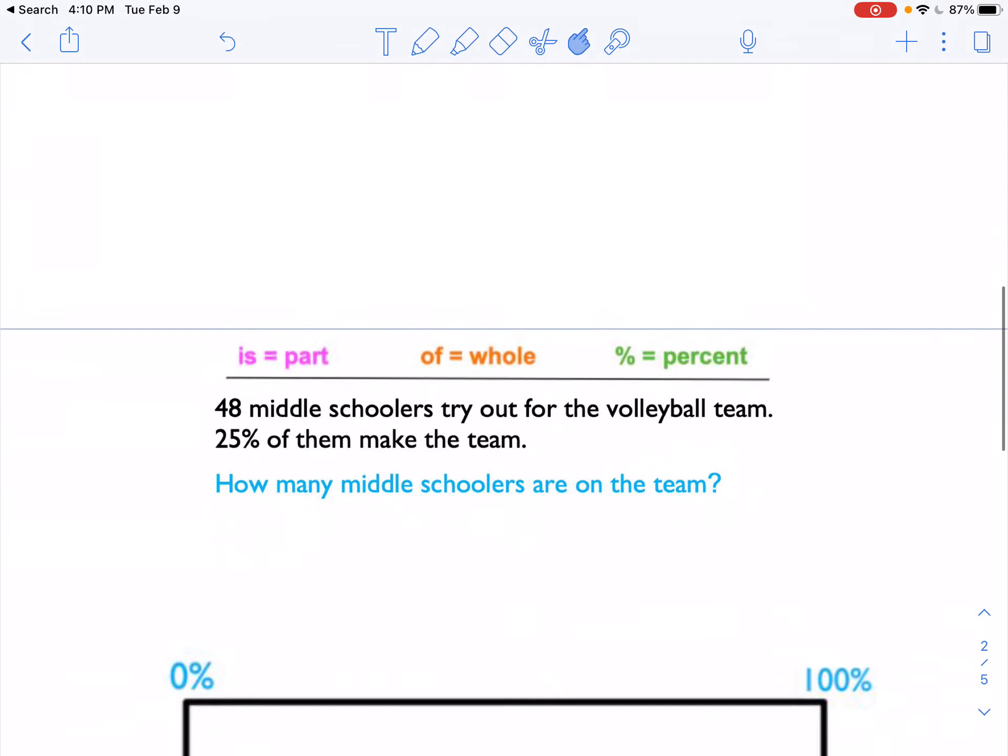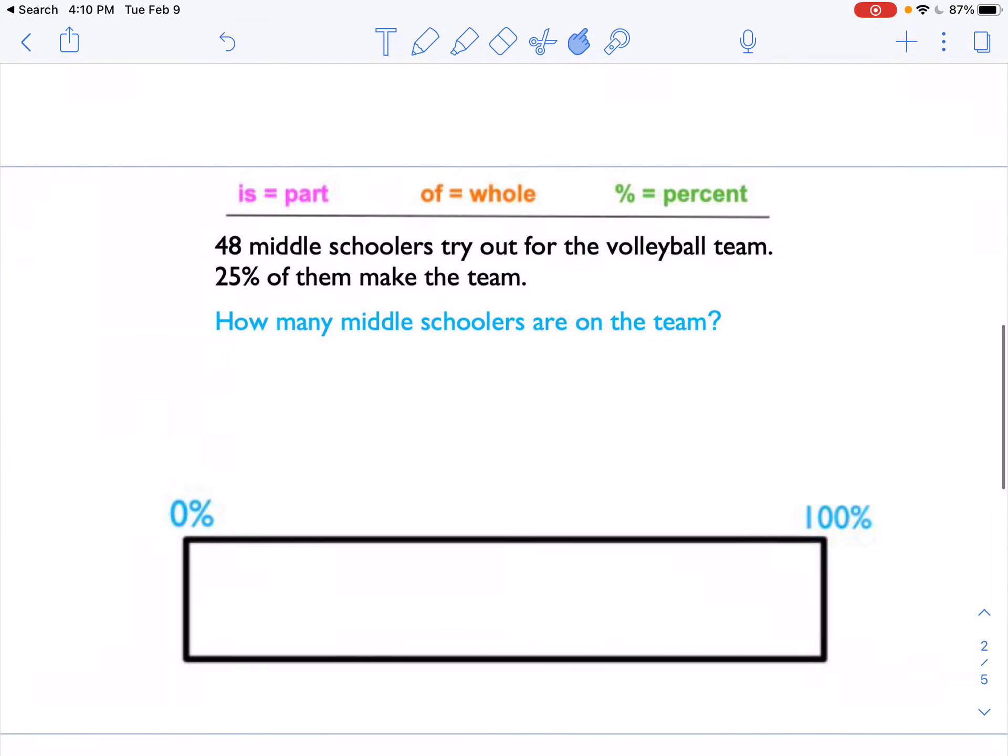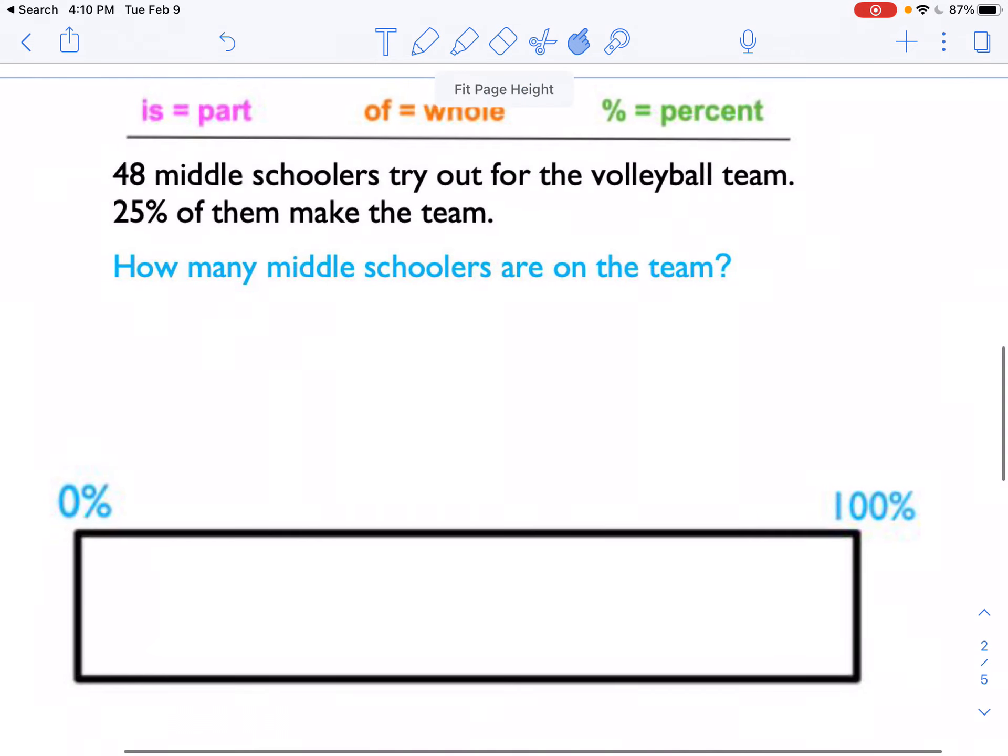The trickiest thing about the word problems is figuring out what we're solving for. So here's the first problem. 48 middle schoolers try out for the volleyball team. 25% of them make the team. And then the question says, how many middle schoolers are on the team?